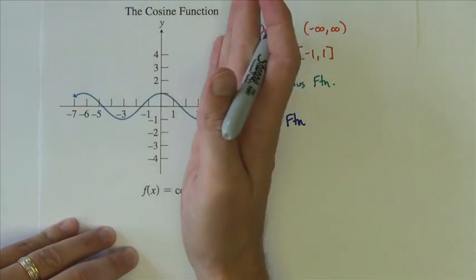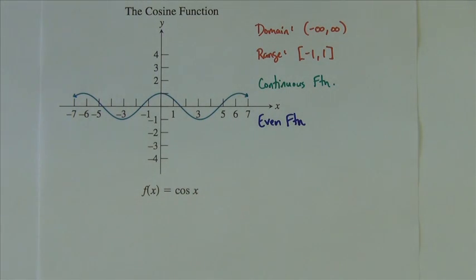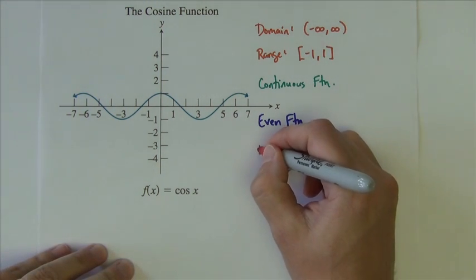If you were to fold the graph over itself on the y-axis, the points would match up. Just like the sine graph, it has minimum and maximum points.